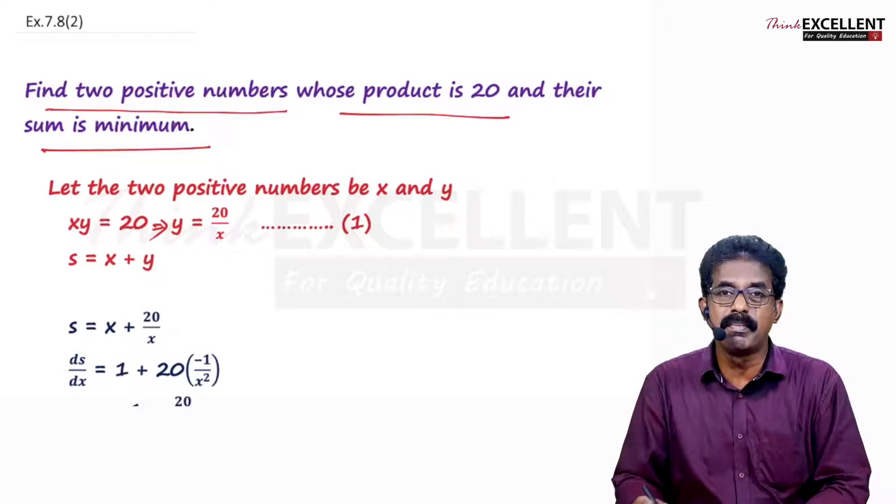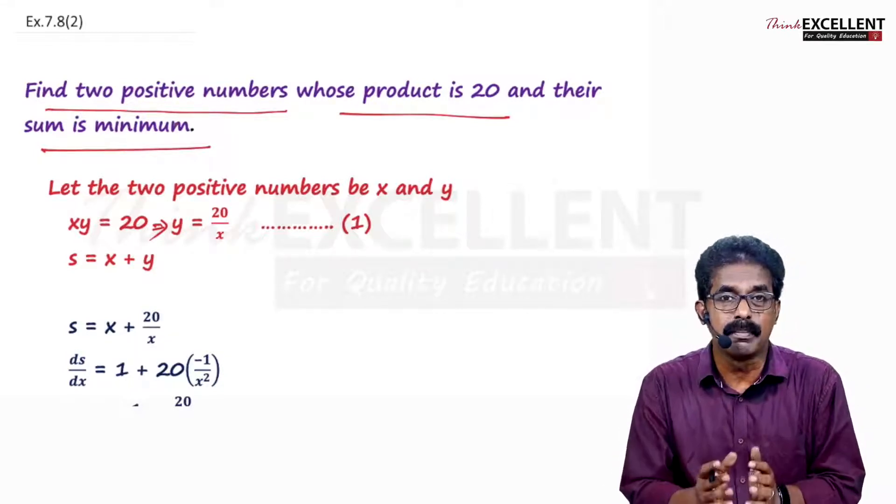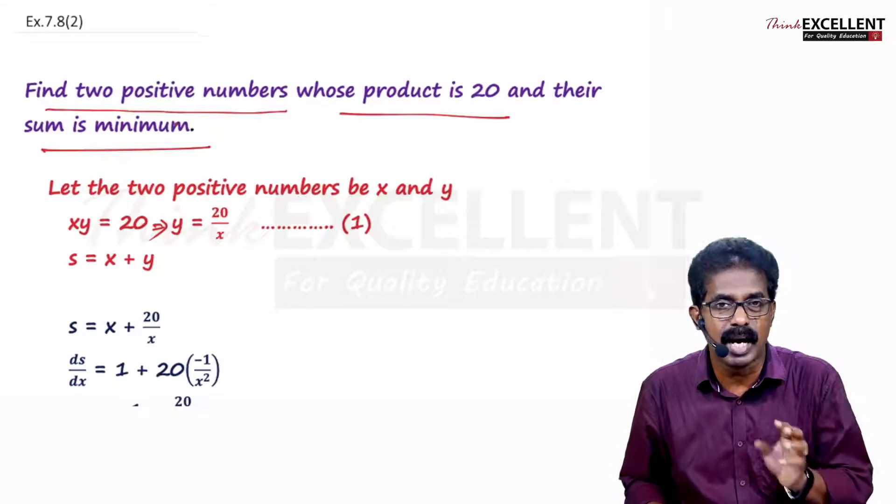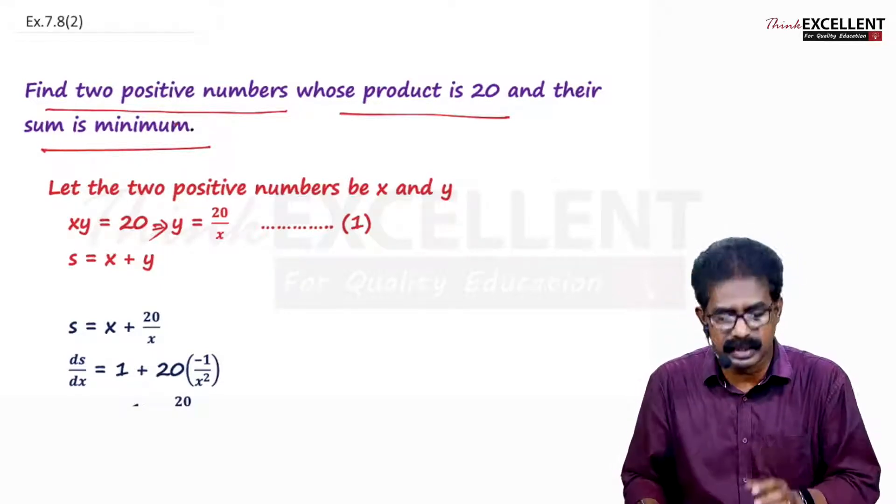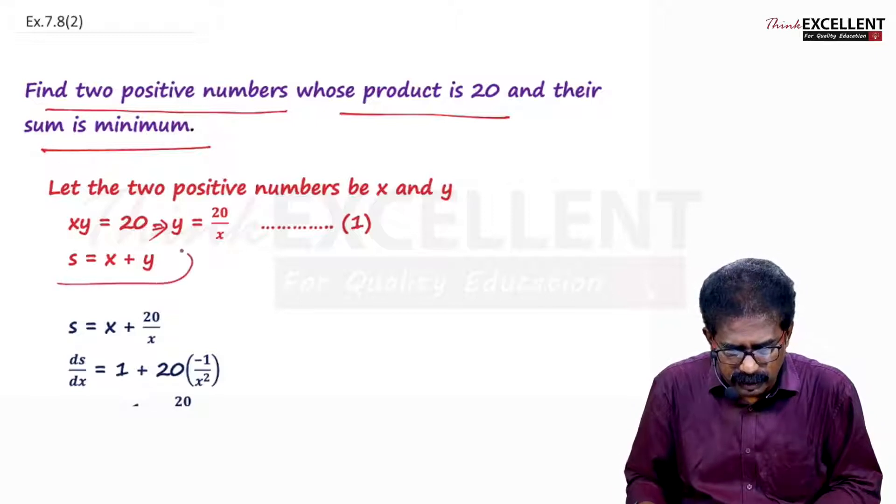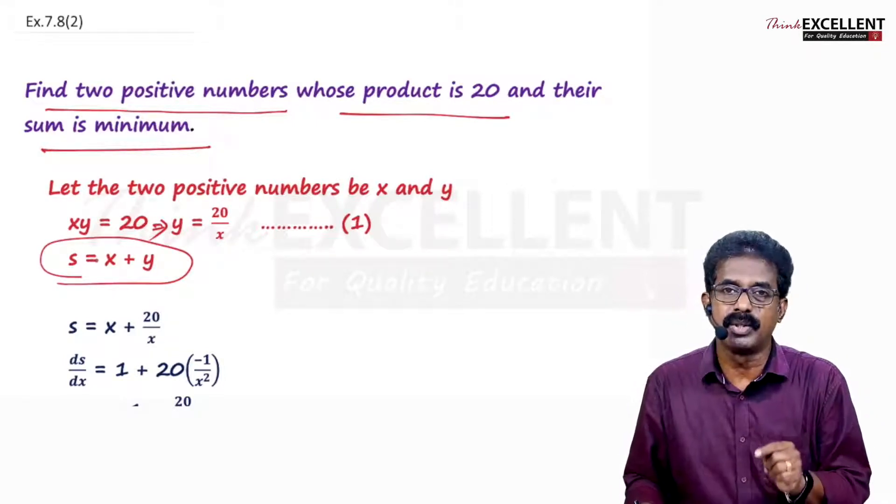The sum is minimum, so find the sum. Product means you multiply, sum means you add it. So you add x and y. What is the sum here? x plus y. Take it as s. You can't do anything with that because s is a function of two variables, x and y. Convert it into a single variable.